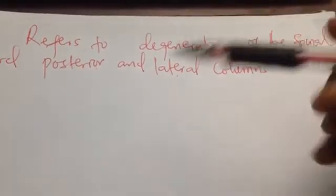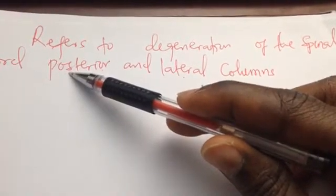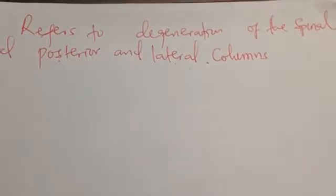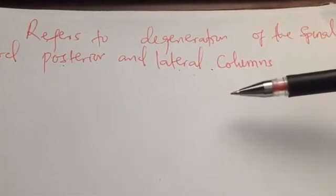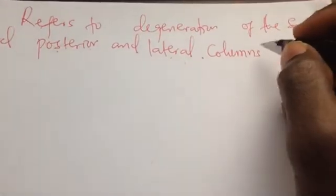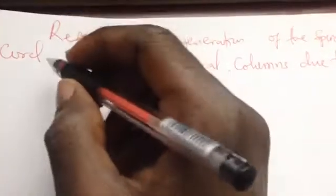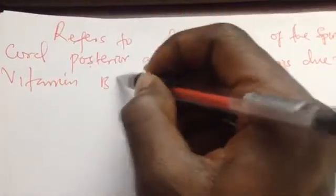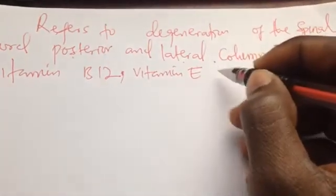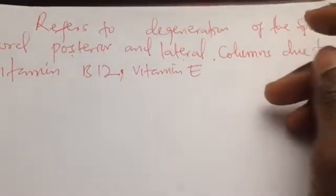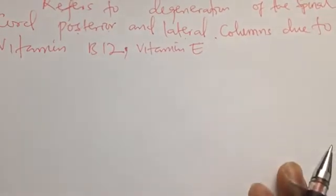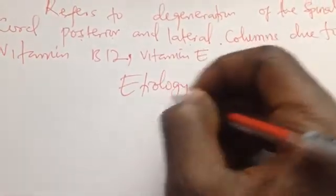The posterior columns carry vibration and proprioception, while the lateral columns carry the descending motor fibers — the lateral corticospinal tract — that control movement of our limbs. This degeneration is due to Vitamin B12 deficiency, which is the most common cause, and sometimes copper deficiency. The disease is associated mostly with pernicious anemia.